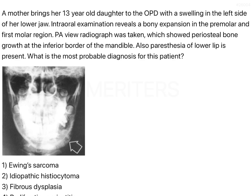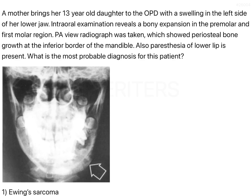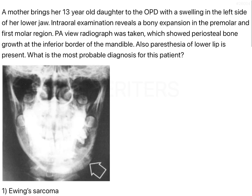What is the most probable diagnosis of this patient? Let's enlarge the image a little so that you can see where the arrow is pointing, showing you the periosteal growth of the bone. This bone growth, as they have mentioned, is growth of the periosteum.